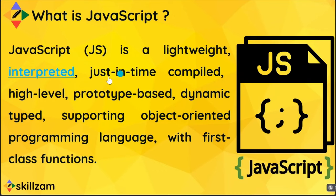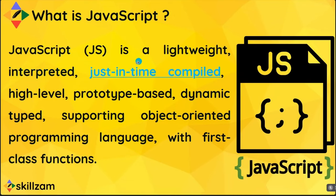JavaScript is also just-in-time compiled. Understand that compiled programming language is different from just-in-time compiled. Just-in-time means it involves compilation during the execution of the program — at the time the program is executed, it is compiled. It is a faster compilation, which is why it is called just-in-time: compilation happens at the time of execution rather than before.